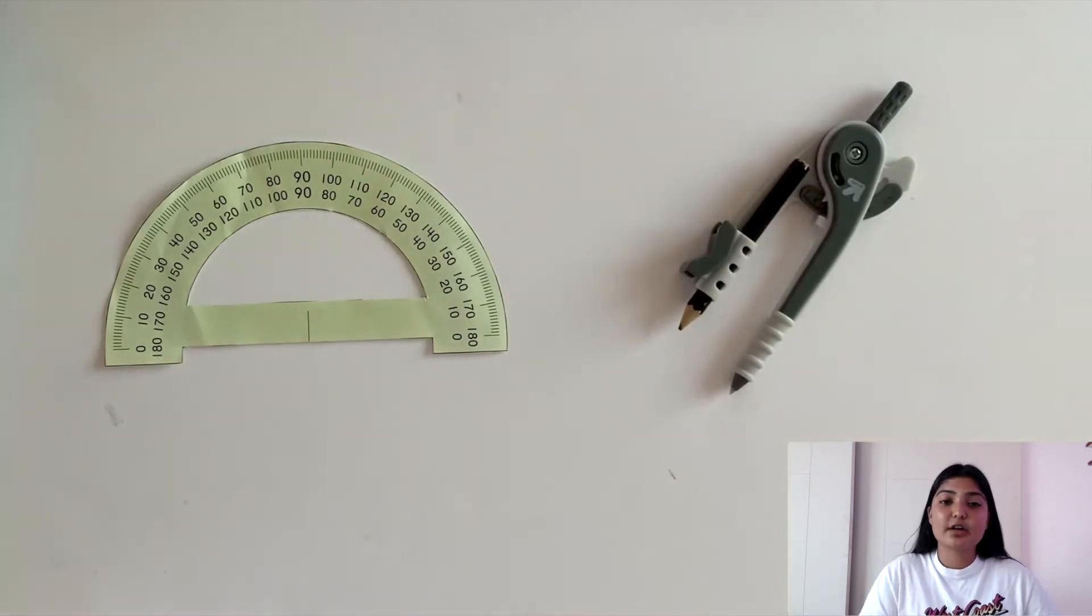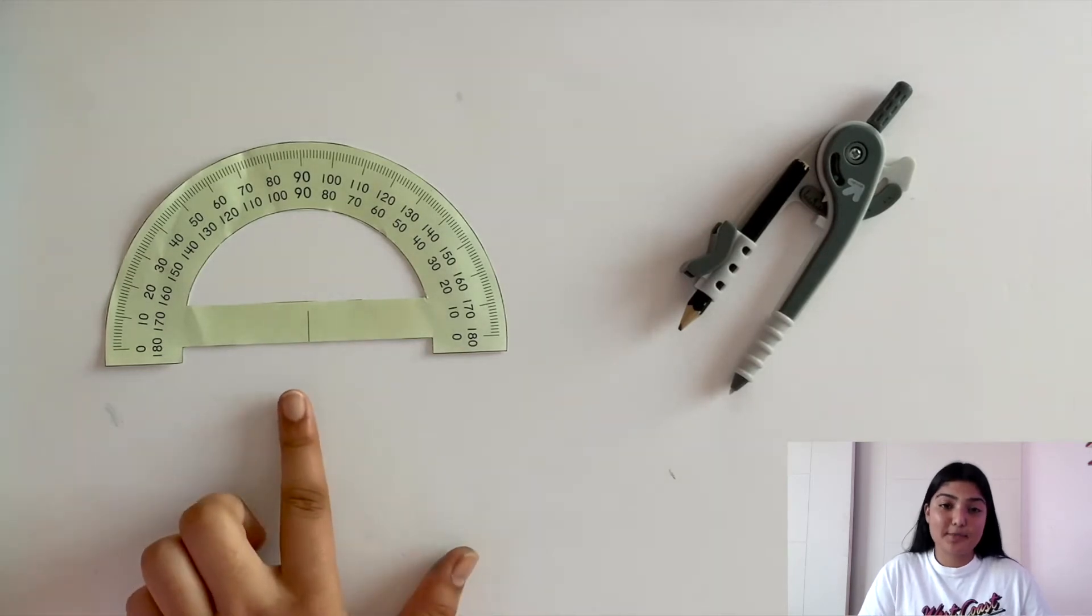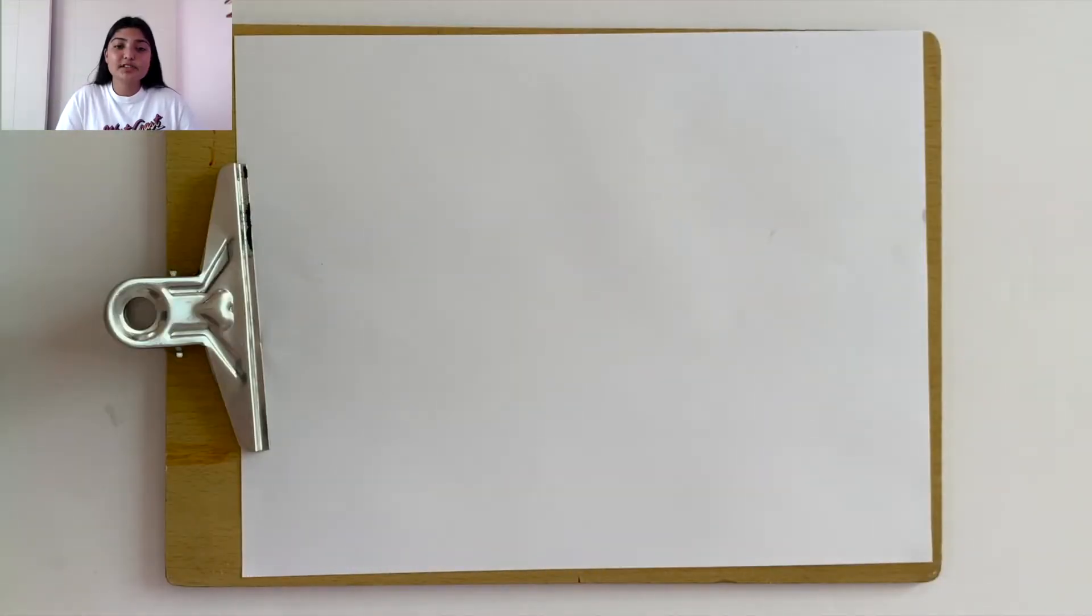Let's start by drawing an angle using a protractor. Suppose I want to draw a 60 degree angle using my protractor. How could I do that?